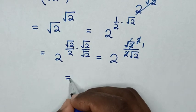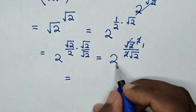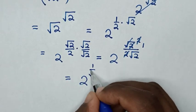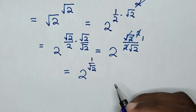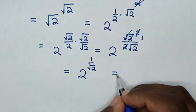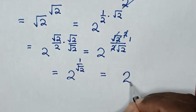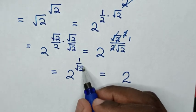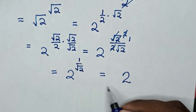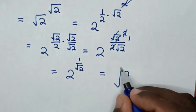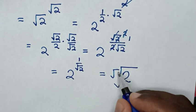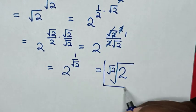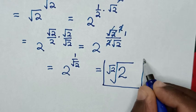Then it will be equal to 2 power of 1 over square root of 2. Then it will be equal to: 2 from the power in the denominator of square root of 2 is the same as root of square root of 2. So this is our final answer.